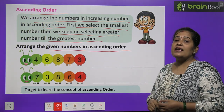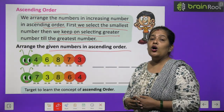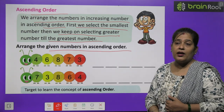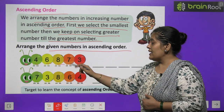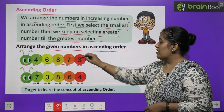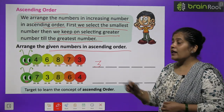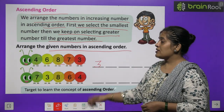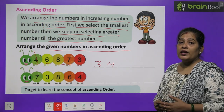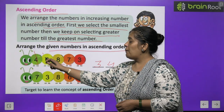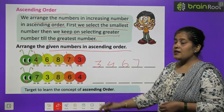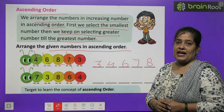Arrange the given numbers in ascending order. The numbers given are 4, 6, 8, 7, and 3. So first of all, the smallest number is 3. We will write 3 first. Then the next number is 4. We will write 4. After that, number 6. We will write 6. Then number 7. And the last one is number 8.